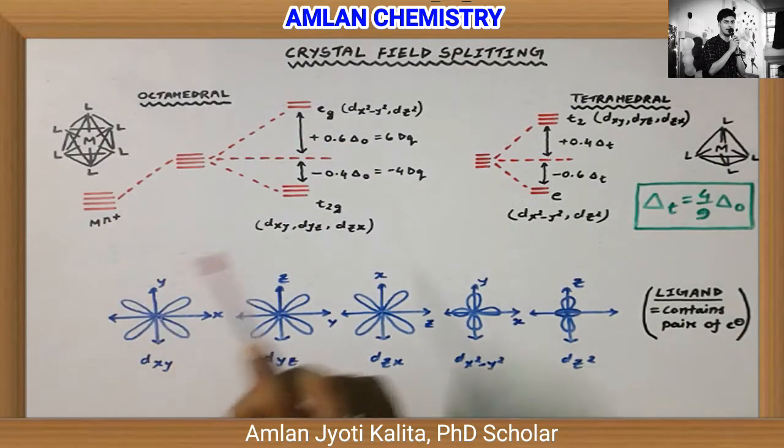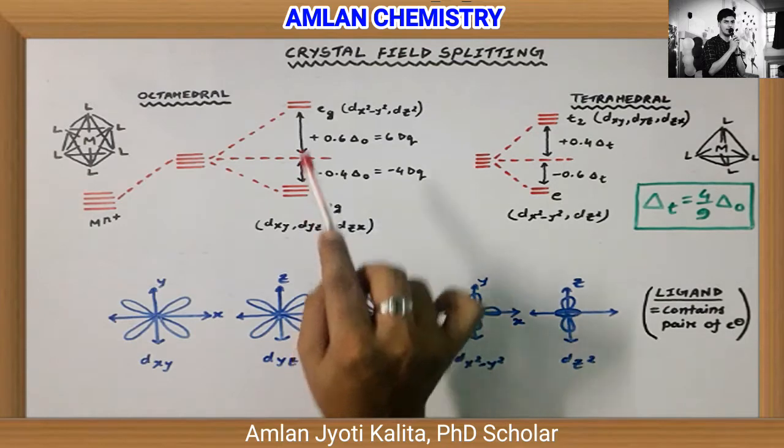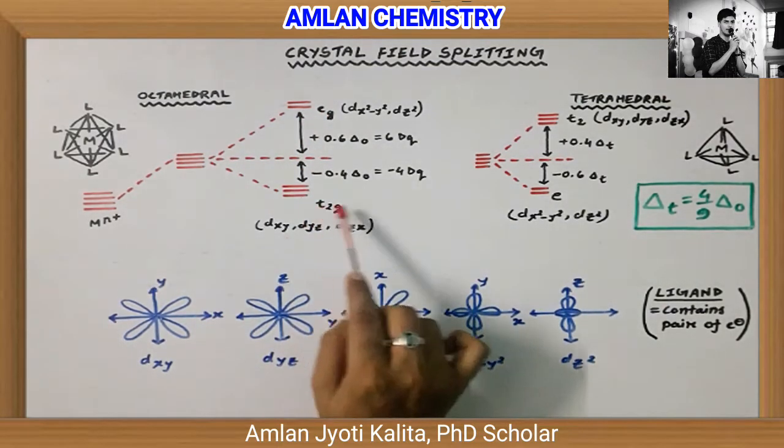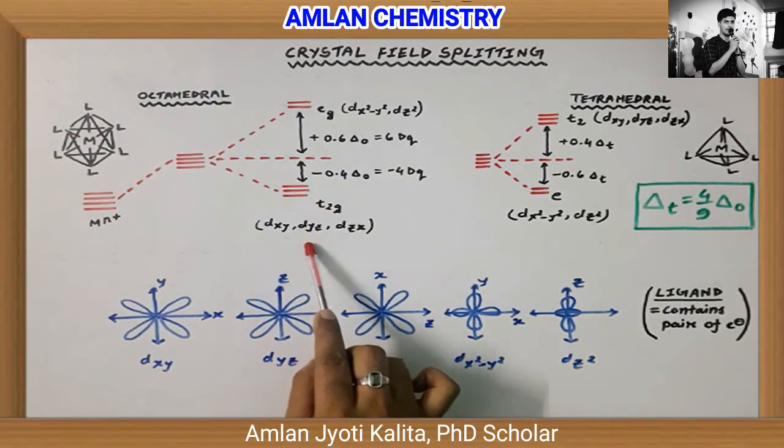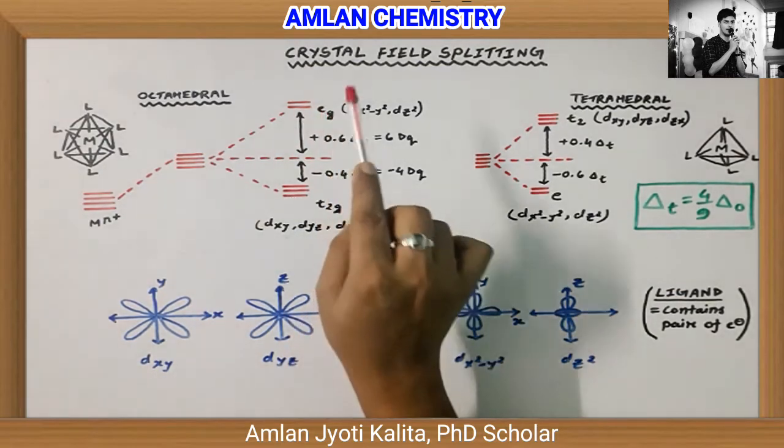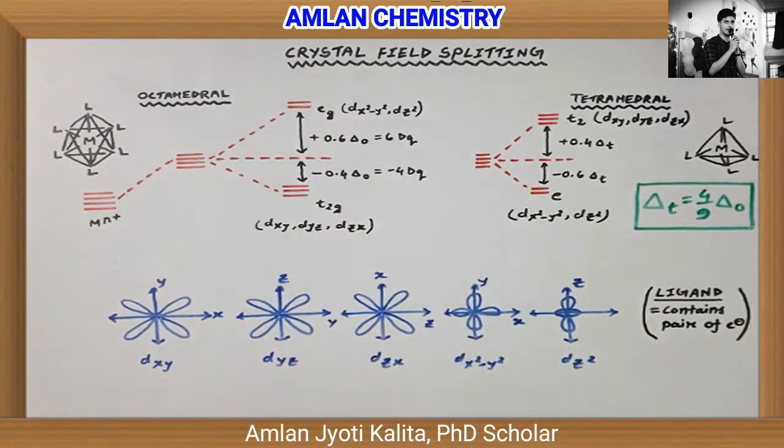For octahedral complexes, one set of orbitals is named T2G and the other is EG. In T2G, there are dxy, dyz, and dzx. In EG, there are dx²-y² and dz².